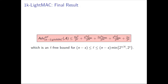This is the final result of 1K LightMAC. The bound is of order q² / 2^n for a certain range of L, and this bound is actually L-free for this range of L. With this, we are done with the first part of the paper.